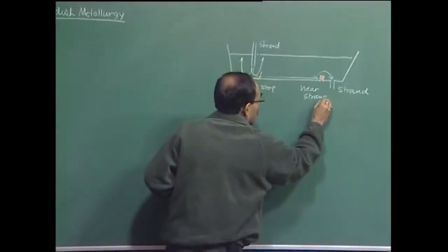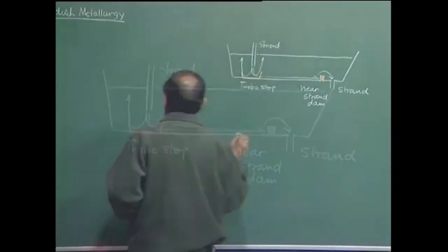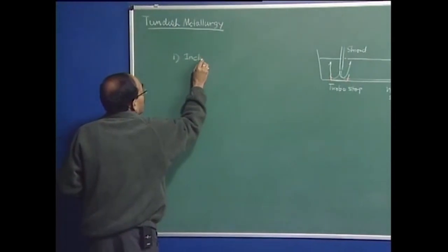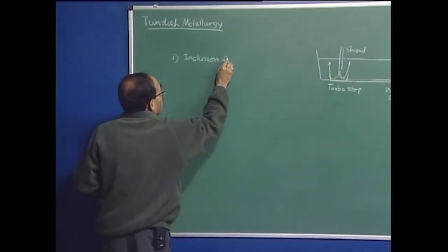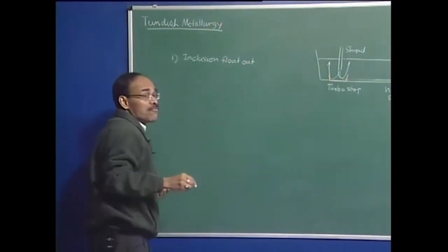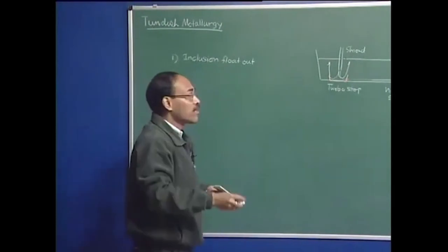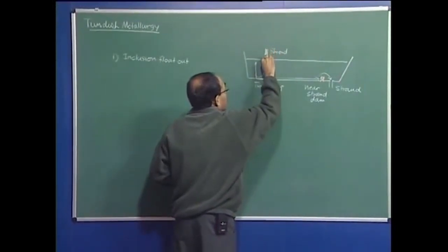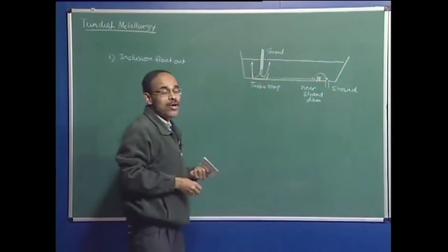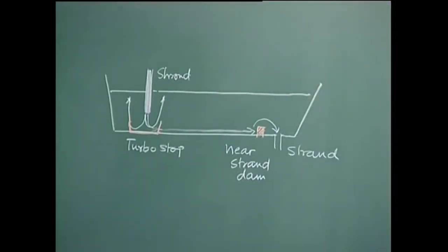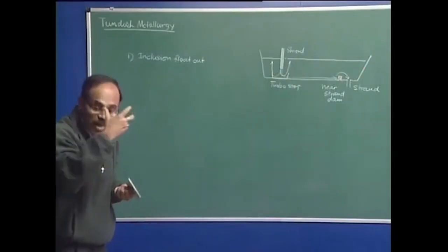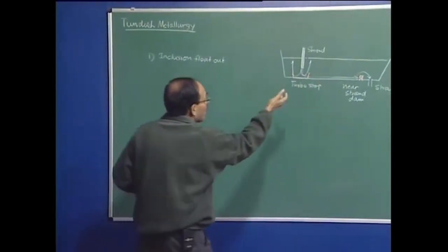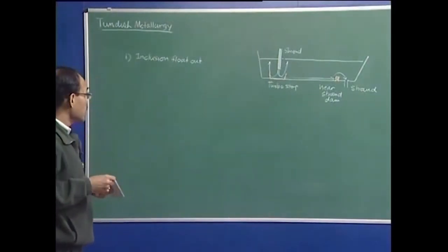The issues in Tundish are several. Number one, the foremost and most important issue is the inclusion float out. Inclusion float out relies on the simple fact that the fluid coming into the Tundish from the ladle resides in the Tundish for some amount of time before it goes out to the strand. In that dwell time, if we can somehow eliminate more and more inclusions, that will be excellent as far as the composition of steel is concerned.